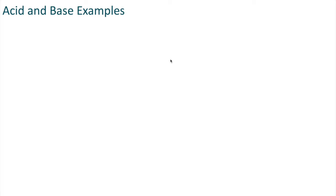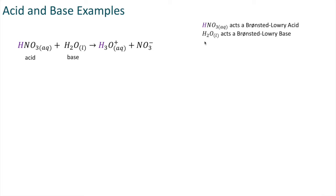Let's take a look at a couple examples. In this case we have nitric acid reacting with water to produce hydronium ion and nitrate ion. In this case HNO3 is going to act as our Bronsted-Lowry acid and water is going to act as our Bronsted-Lowry base. The acid is going to donate a proton to the base.